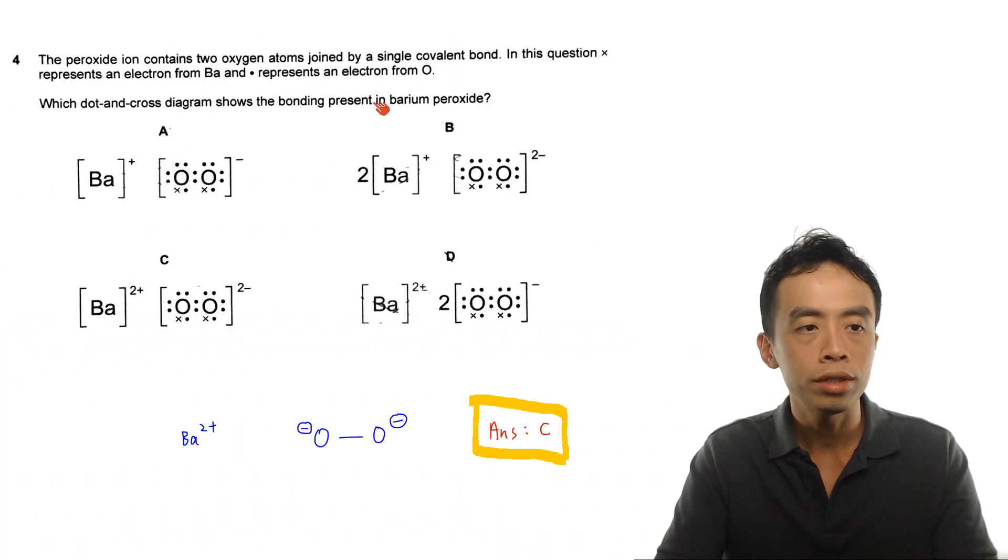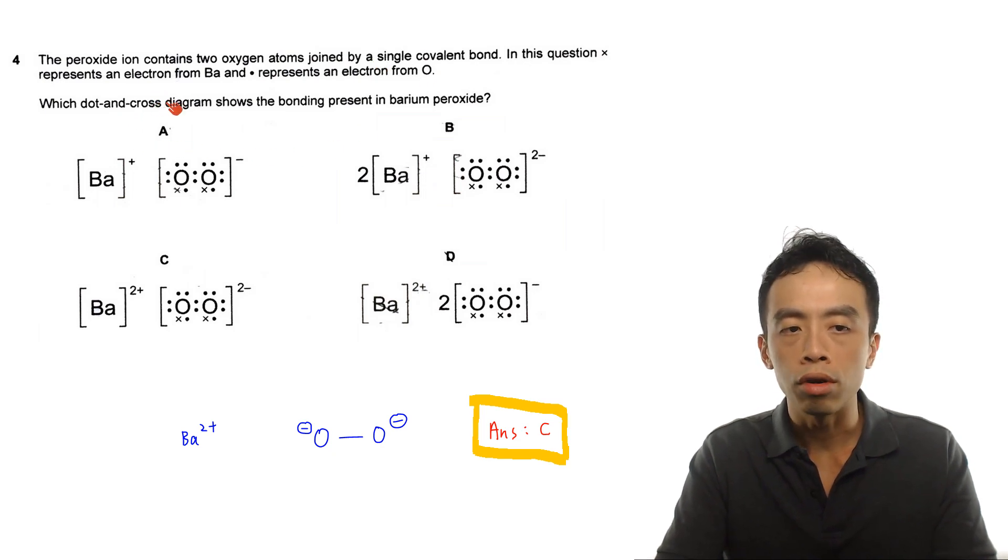Alright, so let's take a look at this question. Question 4, the peroxide ion contains two oxygen atoms joined by a single covalent bond. In this question, cross will represent the electron from barium and dot will represent the electron from oxygen. So which dot and cross diagram shows the bonding present in barium peroxide?